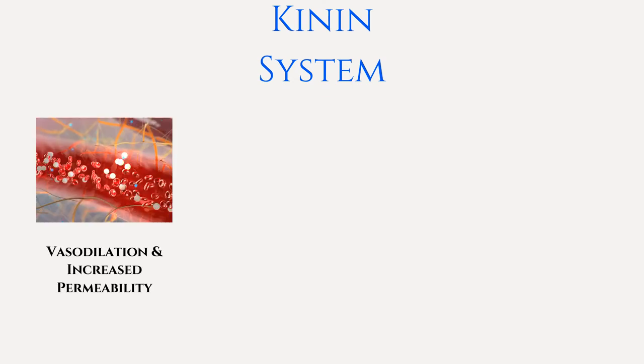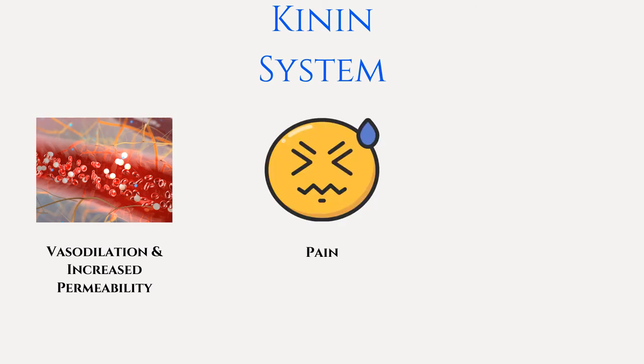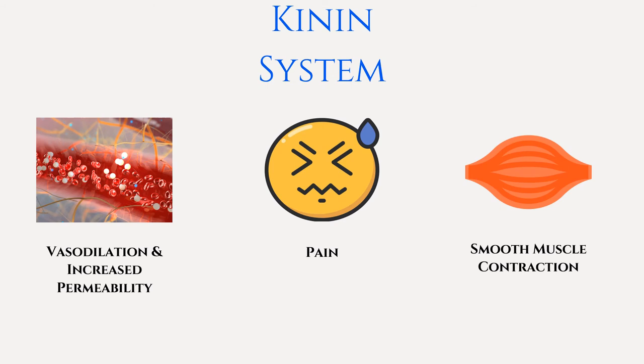The kinin cascade is triggered by injury to blood vessels. The eventual result of this cascade is the production of several inflammatory mediators, with the final product being bradykinin. Bradykinin causes vasodilation and increased vascular permeability, which lead to erythema, heat, and edema associated with inflammation. Bradykinin also induces pain and smooth muscle contraction, thus it causes four of the cardinal signs of inflammation: heat, edema, erythema, and pain.